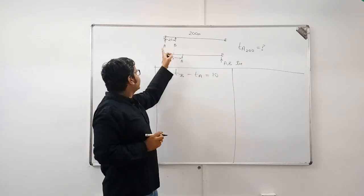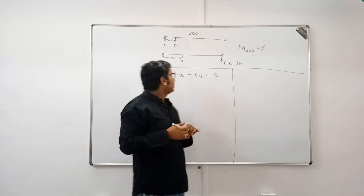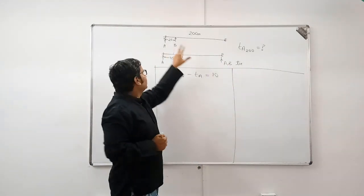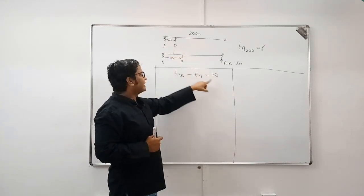You need to find out the time taken by A to cover this 200 meter distance. I am repeating the question. A and B, two runners, run a 200 meter race. A gives B a start of 25 meters and wins the race by 10 seconds.